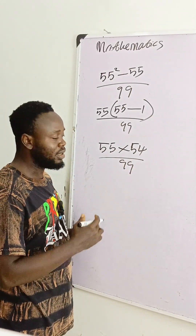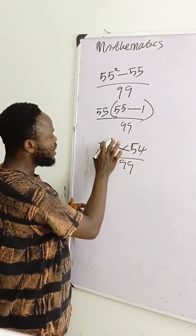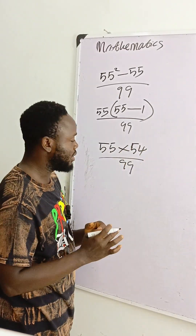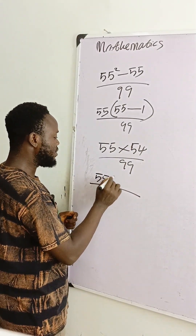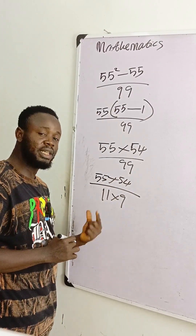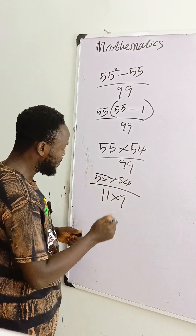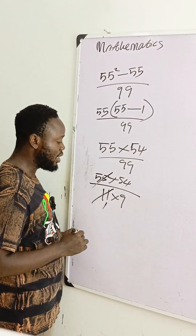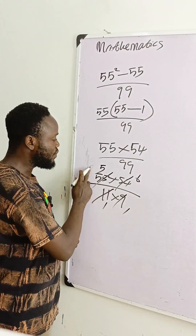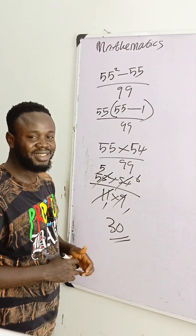Let's manipulate 99 in a way that we can divide up and down. What can we use to divide 54 and 99? We know that 99 is 11 times 9. I use 11 times 9 because they can each divide the numerator terms to make it easier. So 11 will divide 55 to give 5, and 9 will divide 54 to give 6. Therefore 5 times 6 is 30. As simple as it can be — solved without delays. Thank you.